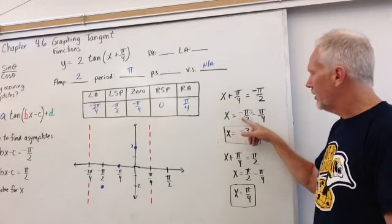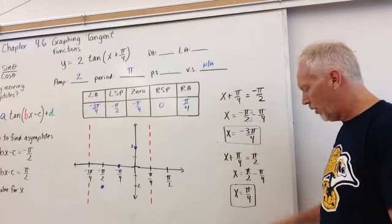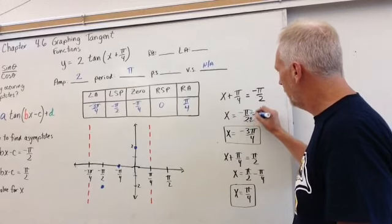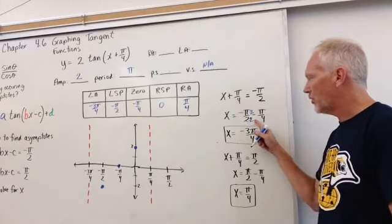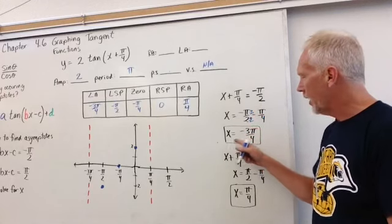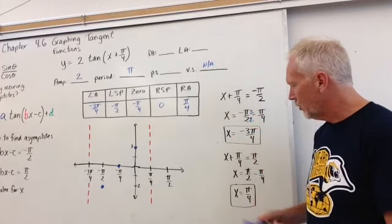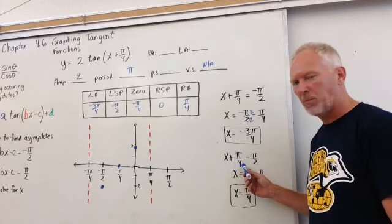We say x equals negative pi over 2 minus pi over 4. We get a common denominator of 4, so I multiply top and bottom by 2. And we get x is equal to negative 3 pi over 4.